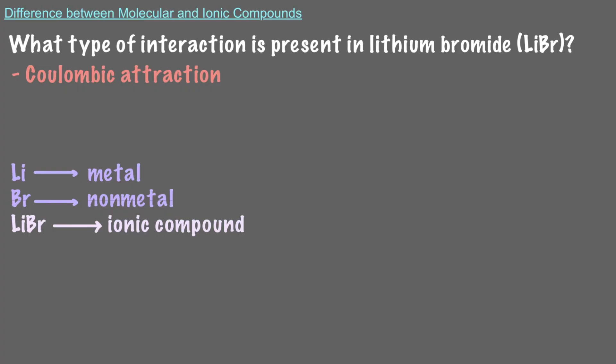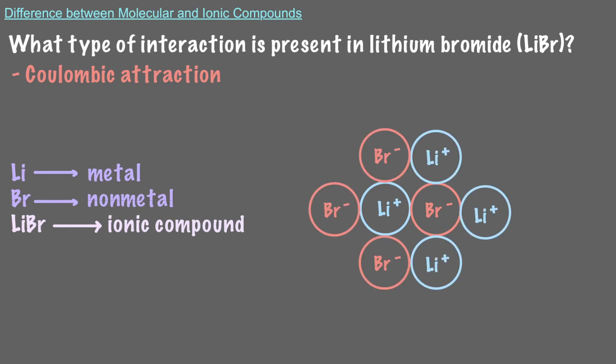Why would the attraction stop with a single Li plus Br minus pair? In fact, it doesn't. Each ion attracts other ions of the opposite charge. So in the end, what we get is a big lattice of ions, and the ratio of cations to anions depends on the charges of each.